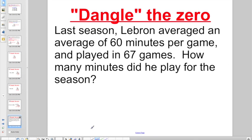Okay, let's try one that's set up as a story problem, but the concept is the same. It's all about dangle the 0 today. Last season, LeBron averaged an average of 60 minutes per game. And he played in 67 games. The old number of groups times the number in each group. 67 is the number of groups. 60 is the number in each group. So, which number do you want on top? If it's all about dangling the 0, I think I'm going to put the 60 on top. I'm going to set this up like this and dangle the 0 on the 60. Because I just don't want to work that hard this morning.